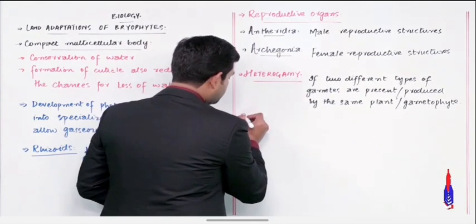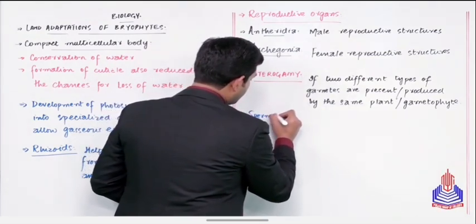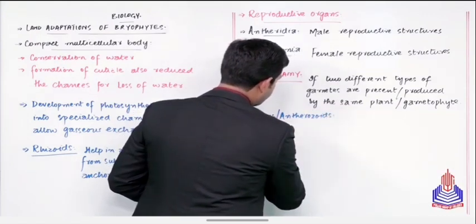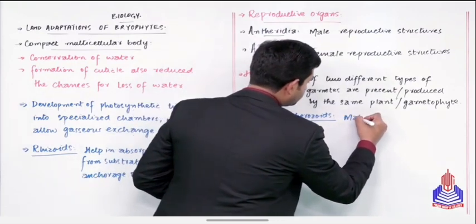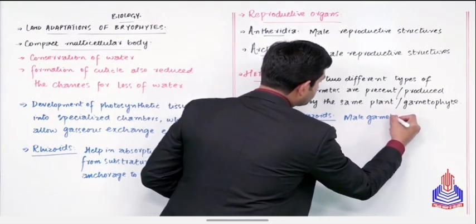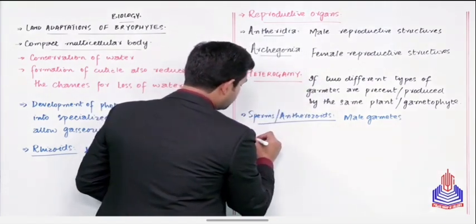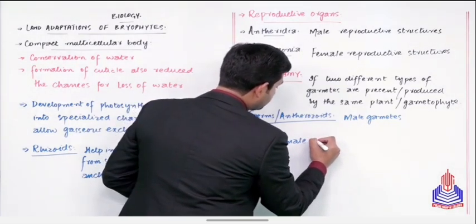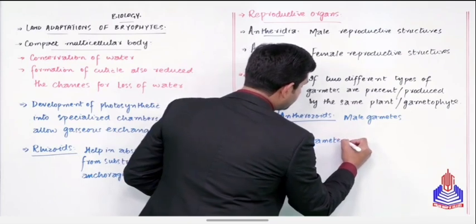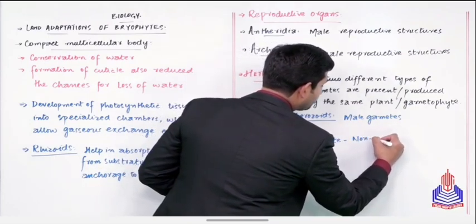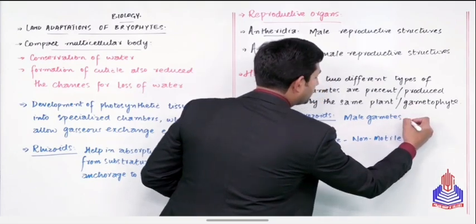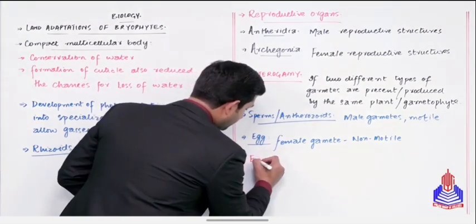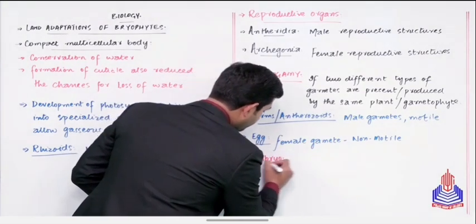And which gametes are those? The male gametes, they are the sperms or antherozoids. These are the male gametes. Then similarly, this is the female gamete, and it is non-motile. The male gametes, they are motile.